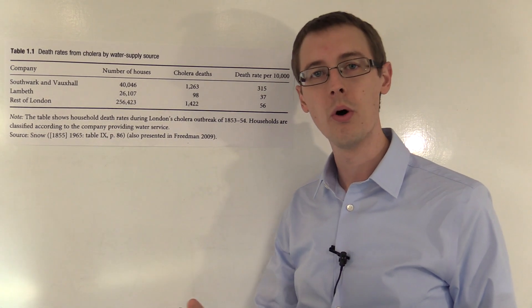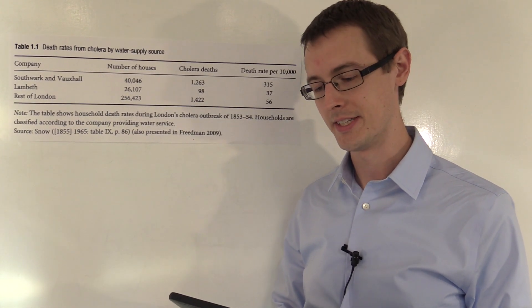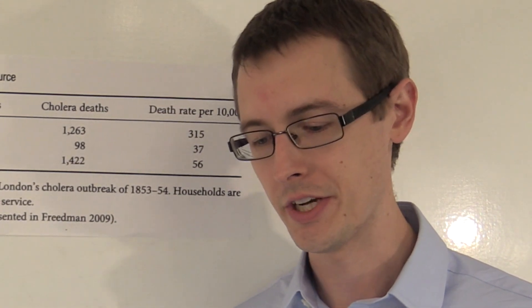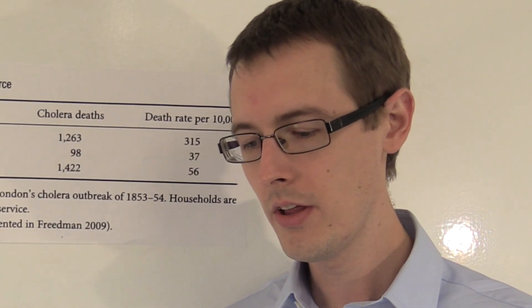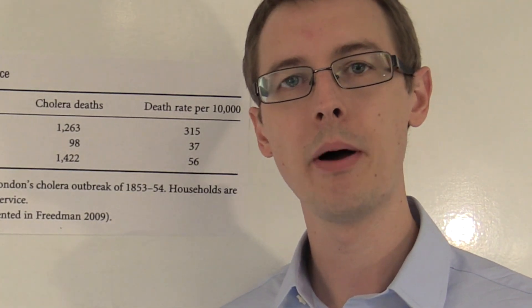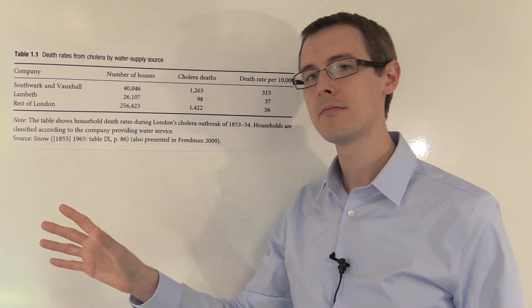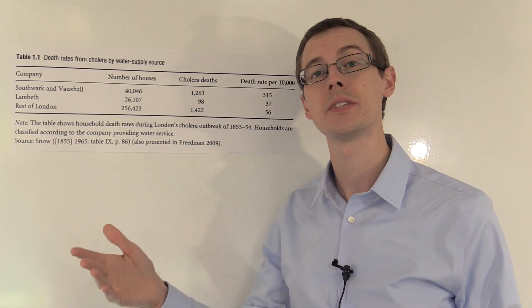How did John Snow justify this? I'm going to read you a quote, because it's really amazing what he said. He said, quote, the mixing of the water supply is of the most intimate kind. The pipes of each company go down all the streets and into nearly all the courts and alleys. A few houses are supplied by one company and a few by the other, according to the decision of the owner or occupier at the time when the water companies were in active competition. In many cases, a single house has a supply different from that on either side. Houses on the other side of the streets are supplied by different companies, even though they're on the same street.